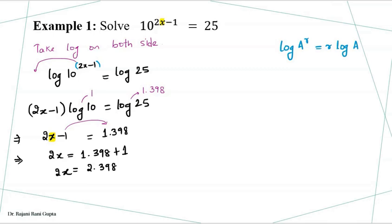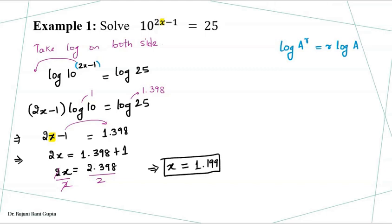We are looking for the value of x, so we take the minus 1 to the other side, giving us 2x equals 1.398 plus 1, which is 2.398. As we need the value of x, we divide both sides by 2, which gives us x as approximately 1.199. This is the way we solve this type of question.